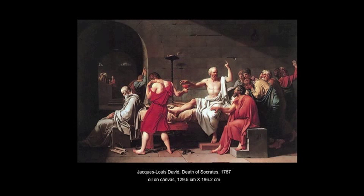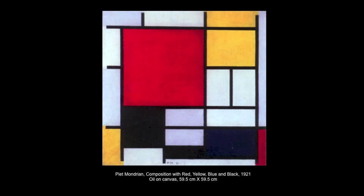We're going to now look at three artworks: The Death of Socrates by Jacques-Louis David from 1787; a Composition with Red, Yellow, Blue, and Black painted in 1921 by Piet Mondrian; and a video work, Through the Night Softly, made by Chris Burden in 1973. Using the categories of form, theme, and context in our analysis, hopefully we'll arrive at a deeper understanding of these artworks and see how form, theme, and context can be a powerful tool in our search for meaning in art.